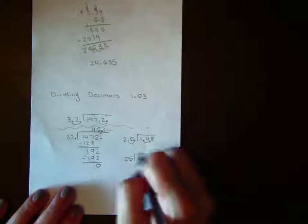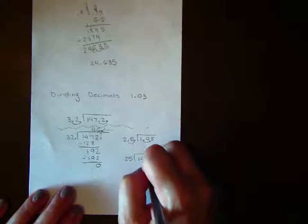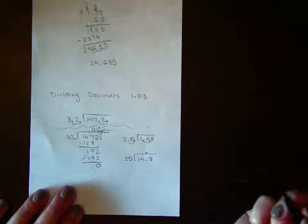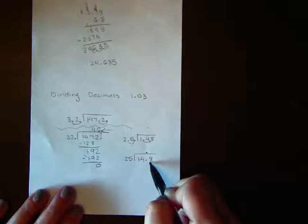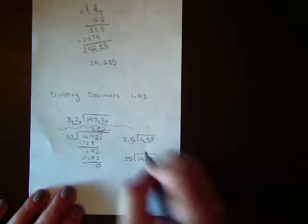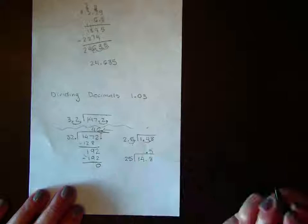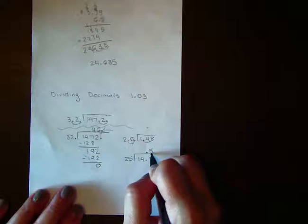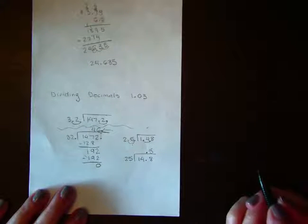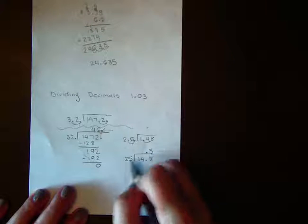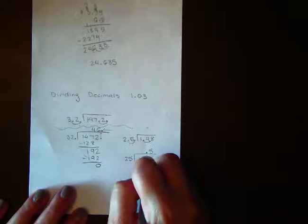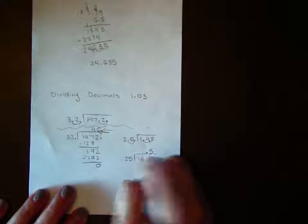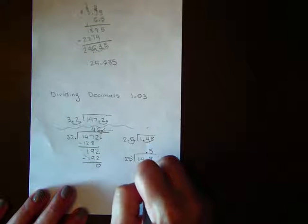Now, when you still have a decimal point here, it's going to go straight up. And then we just divide like normal. 25 goes into 148 five times. And as you notice, it's already to the right of my decimal point. 5 times 25 is 125. We're going to subtract. And that's 23.